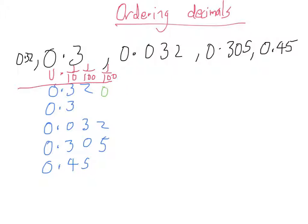If we look at 0.3, I'm going to add two zeros after the decimal point. We don't need to do anything to the next two, but if we look at 0.45 I'm going to add one extra zero. Now each number has got three numbers after the decimal point.